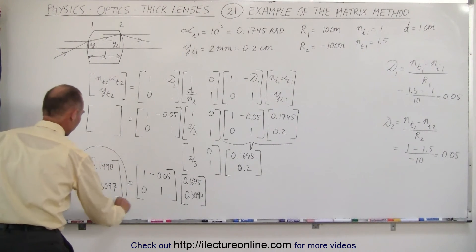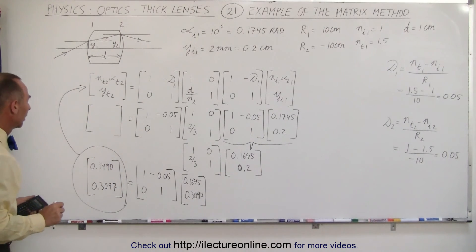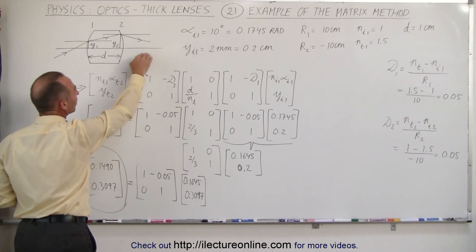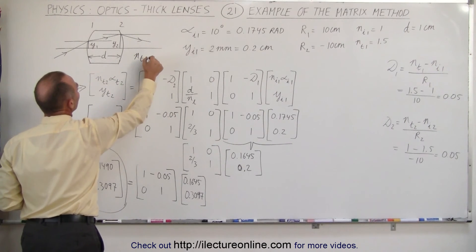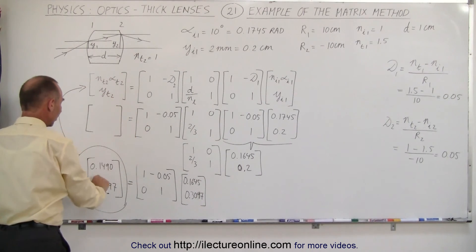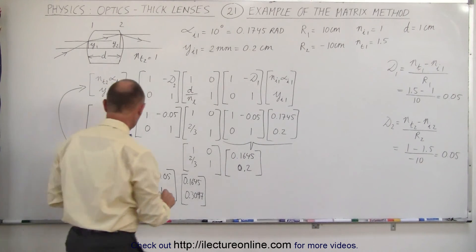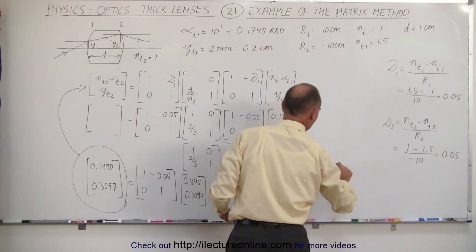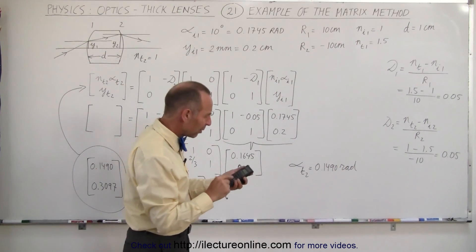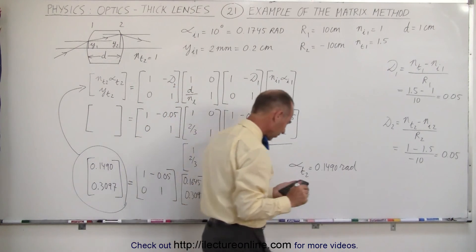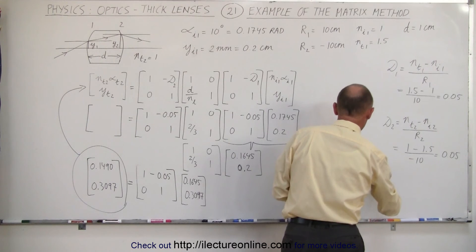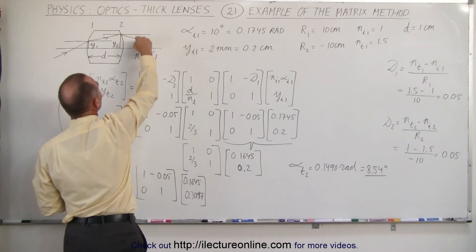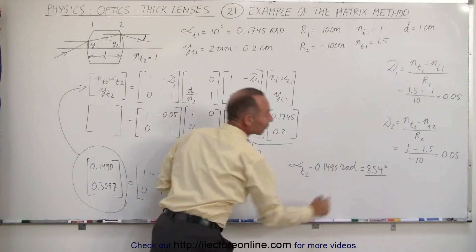Now this is the result, what we're looking for. The top number represents the index of refraction Nt2 outside the lens on the other side, which we know must equal 1. If that equals 1, then the angle in radians is 0.1490 radians. So alpha T2 is equal to 0.1490 radians. And to convert that to degrees, we multiply by 57.3, and that gives us 8.54 degrees. That's the angle of the ray relative to the horizontal, this angle right here, which is 8.54 degrees.